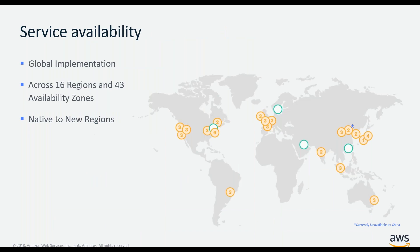One of the other tenets we have as a service is that security tools do need to be made available globally. When we launched GA, we launched in all of the public regions. We added GovCloud support earlier this year, and we will be native also to new regions when we launch them. The only two regions we're not currently available in are the two regions in China, but we do plan to add those later in the future.